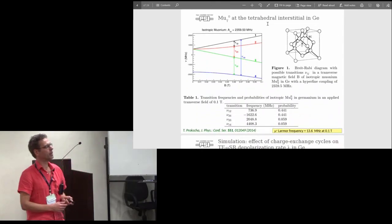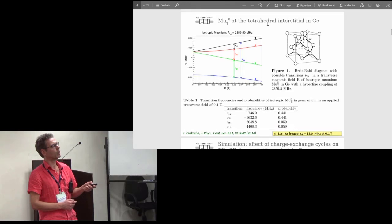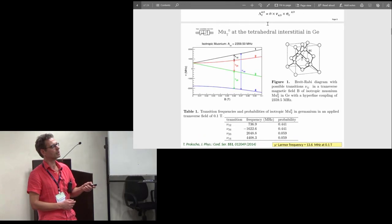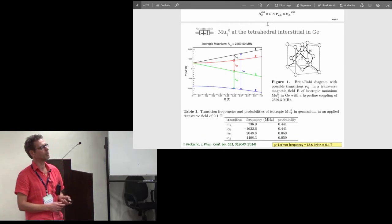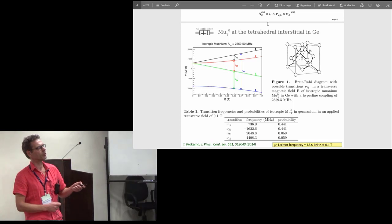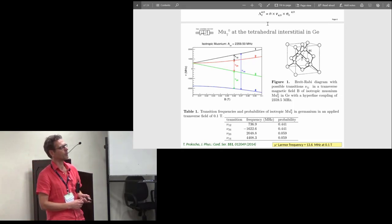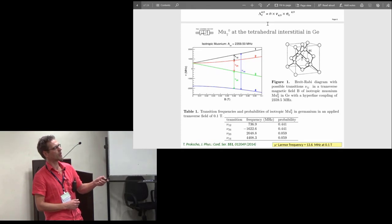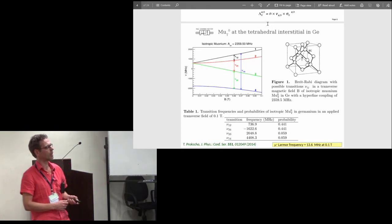In germanium there are actually two muonium sites. One is this bond center site between two germanium atoms, but the fraction of the muons stopping there is small, just 10 to 20 percent. The dominant fraction goes to the tetrahedral site where it forms a muonium state with isotropic hyperfine interaction and with about 2.4 gigahertz hyperfine coupling.